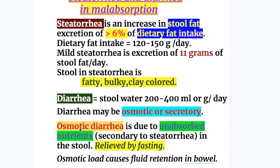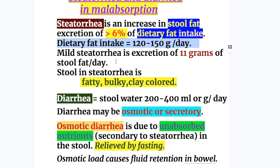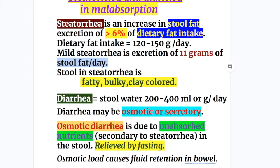Let's discuss steatorrhea and diarrhea in malabsorption. Steatorrhea is an increase in stool fat — excretion of more than 6% of dietary fat intake. Normally, dietary fat intake is about 100 to 150 grams a day. Mild steatorrhea is excretion of 11 grams of fat in the stools per day. Stool in steatorrhea is fatty, bulky, and clay colored.